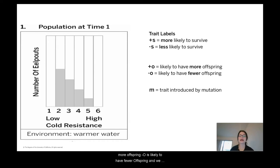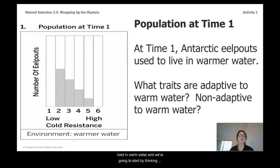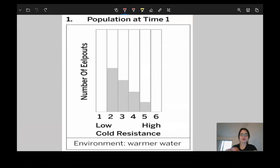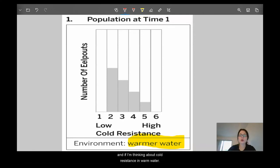And we have a new trait label: M — trait introduced by mutation. For what I'm going to demonstrate, this is my histogram of the Antarctic eel pout at time one, when they lived in cold-warm water. We're going to think about which traits are adaptive for warm water and which are not, considering the trait of cold resistance. I'm labeling for survival and offspring — we can't really label any mutations at time one.